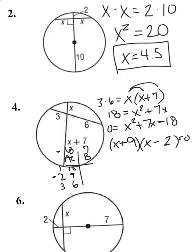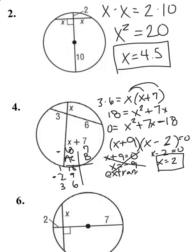I'm going to set each factor equal to zero. One of these factors cannot be the length of that segment. I say X plus 9 equals zero, and X minus 2 equals zero. Subtract 9 from both sides, add 2 to both sides. My solution is X equals 2 because X cannot be a negative number. That's extraneous solution.